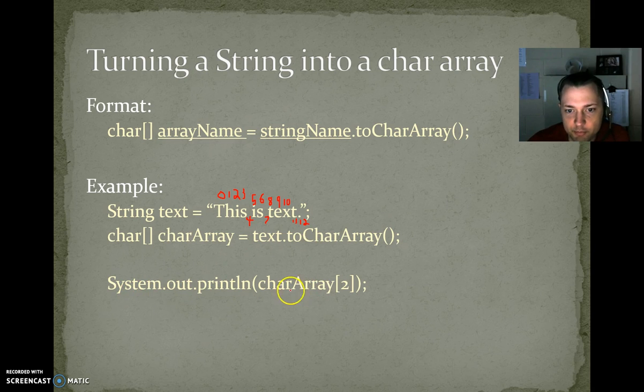So then if I do System.out.print charArray[2], that would print an I because—I don't know what I was drawing right there—that will print an I because at position 2 we have an I.